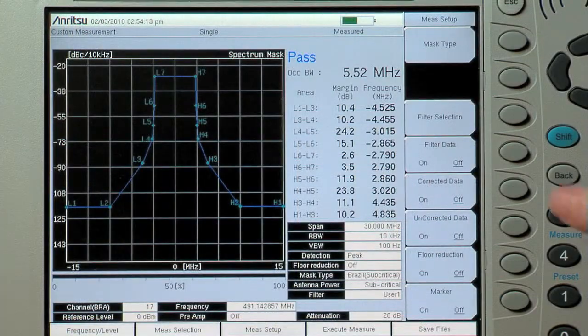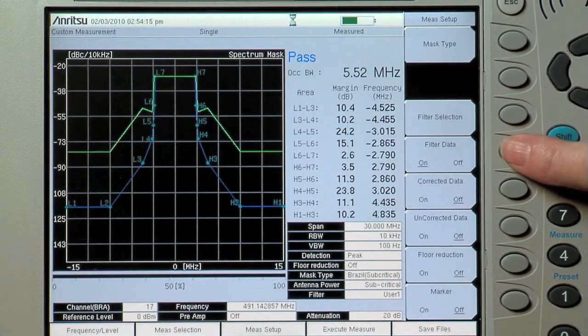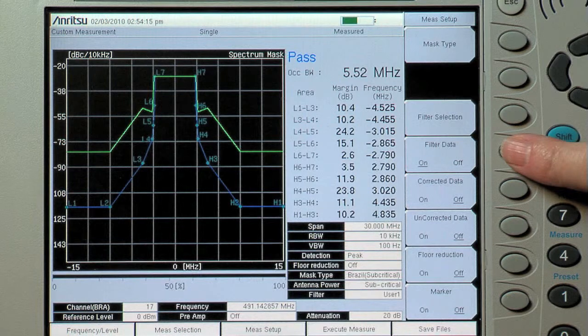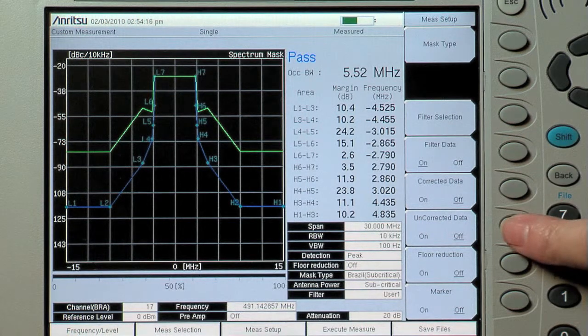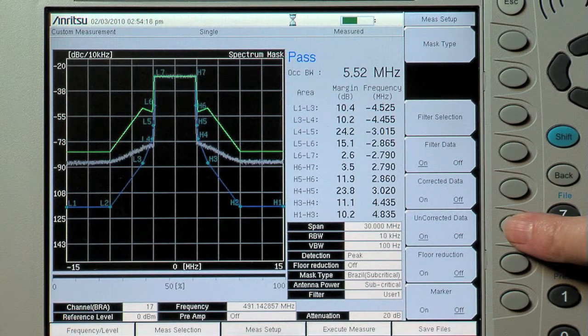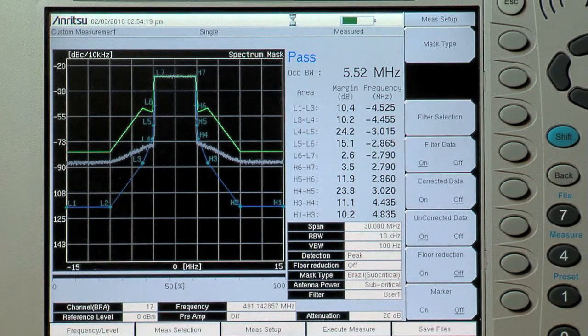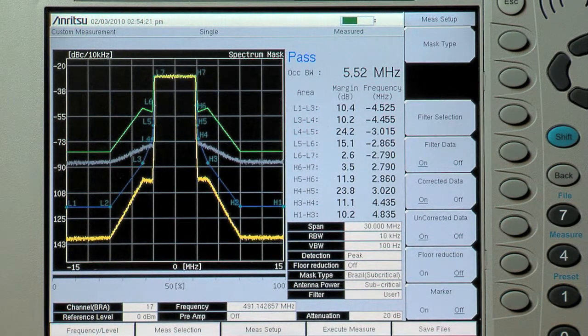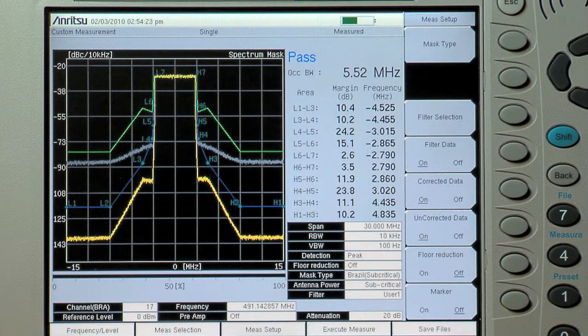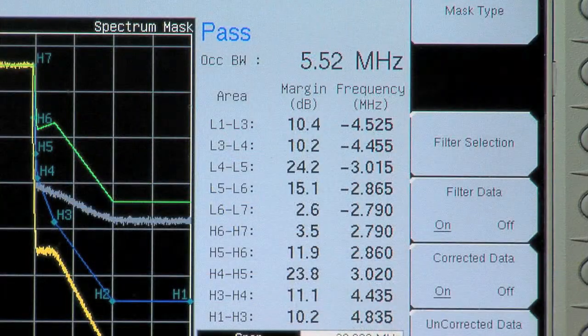During the measurement, a technician has complete flexibility on how to display and record the results to internal memory. However the transmitter is configured, they can show and save any combination of filter corrected data, uncorrected data, and filter response together with the appropriate spectrum mask and immediately judge the transmitter's compliance.